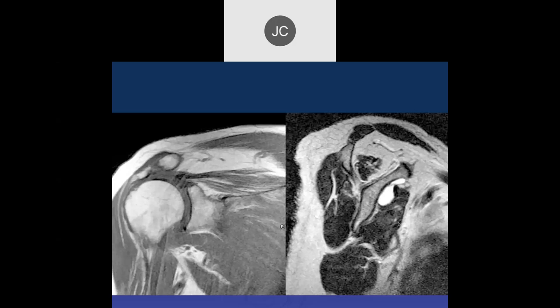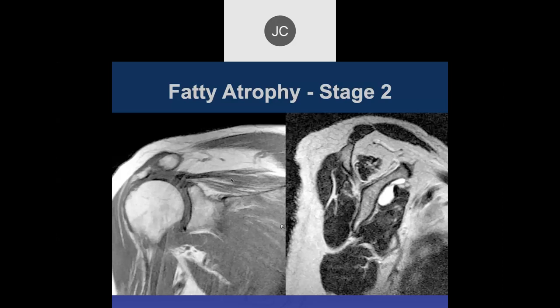Here's a full-thickness supraspinatus tear with retraction of the myotendinous junction. The muscle shows some fatty streaking — roughly Stage 1 to 2. If you see fatty atrophy isolated to the supraspinatus with all other muscles normal, it's significant because it probably indicates a chronic long-standing tear. The chronicity of the tear likely correlates best with scarring, whereas if all muscles show atrophy the fatty atrophy is less meaningful.